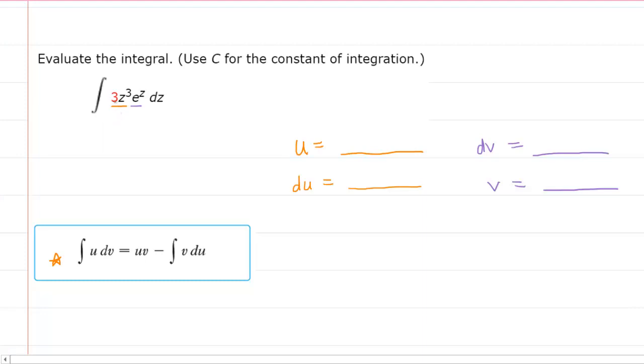For example, if we computed the derivative of 3z cubed, we would have 9z squared. Whereas if we computed the derivative of e to the z, we would still have e to the z. In the latter case, the derivative did not yield a simpler function. It actually yielded the same function.